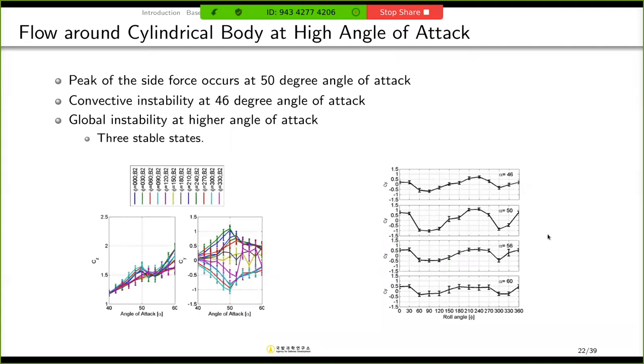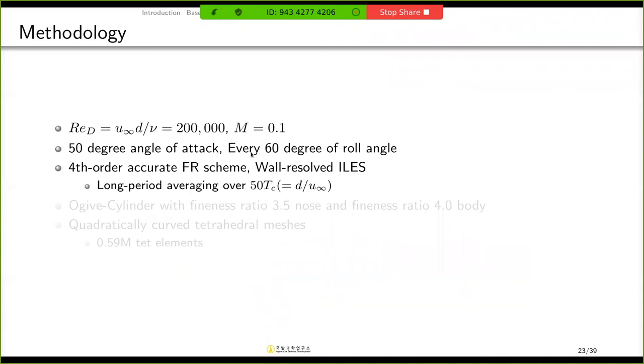In this study, I will try to reproduce this discrete side force distribution. So this is the problem setup of my simulation. The Reynolds number is quite low, and Mach number is just 0.1. And the angle of attack is 50 degrees. And in this study, I fixed my mesh, but I changed the flow direction. So I changed the bank angle of the flow.